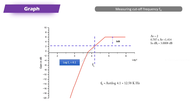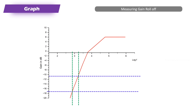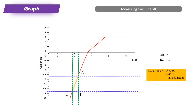We have obtained the lower cut frequency. Now we determine the gain roll-off. For a first order filter, the gain roll-off should be 20 dB per decade. We check this in the stop band region by determining the slope. Marking points A, B, and C on the graph: AB equals 4 and BC equals 0.2. Gain roll-off equals AB divided by BC, which is 4 divided by 0.2, equal to 20 dB per decade. This confirms the first order high pass filter characteristic.